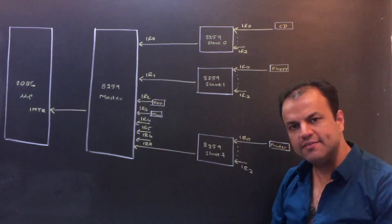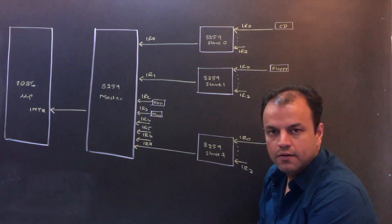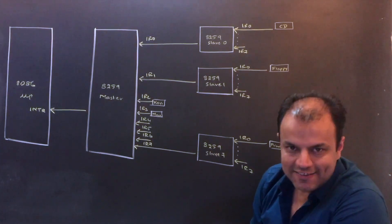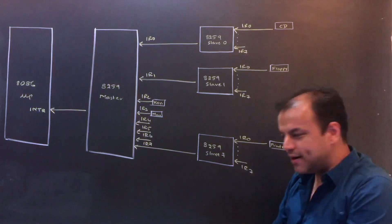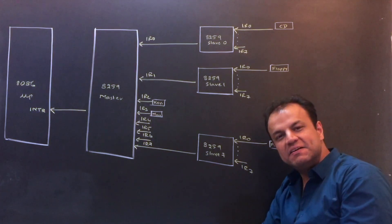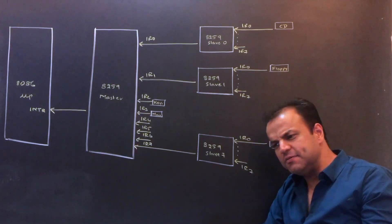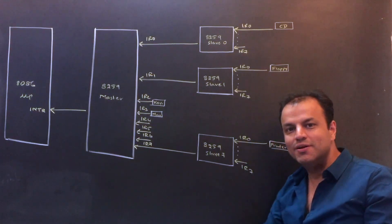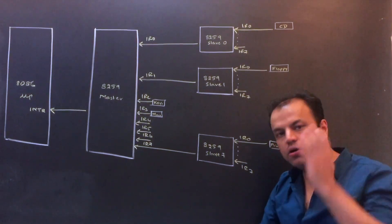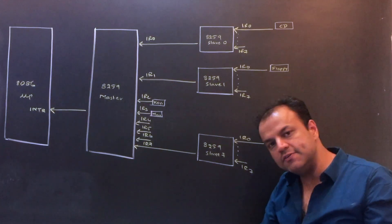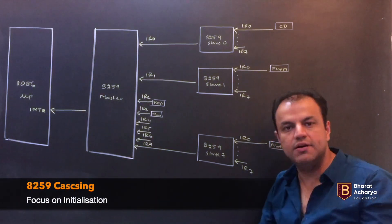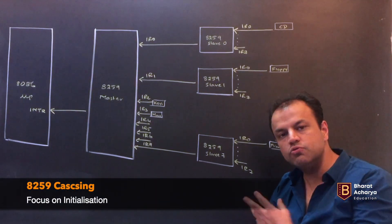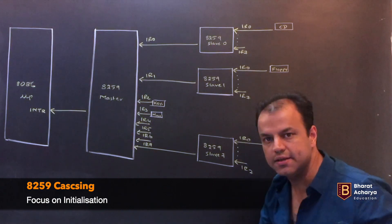Next thing I want you to understand. People are trying to understand this architecture - cascaded 8259 firing. Some people say it's the toughest topic of CPU. Rubbish - it's a beautiful topic. But you've got to learn it the right way. If you try to read this answer directly, you'll never understand it - you'll just memorize it. To understand this answer, you need to know initialization.